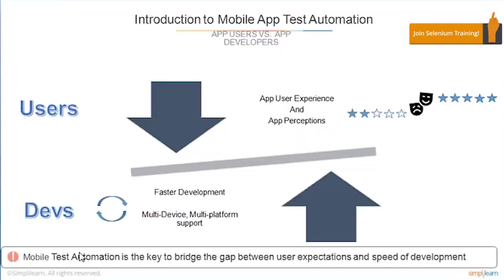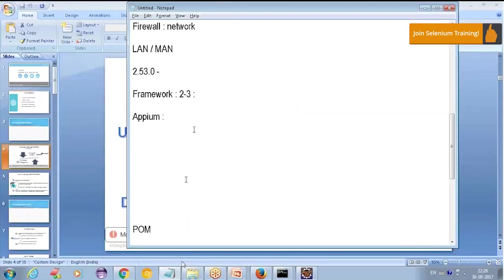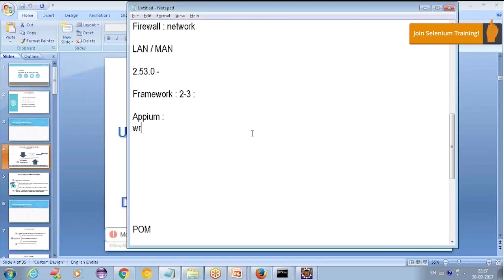Test automation is the key to bridge the gap between user expectation and speed of development. So first of all, what is Appium? Anthony has mentioned that it is a wrapper.